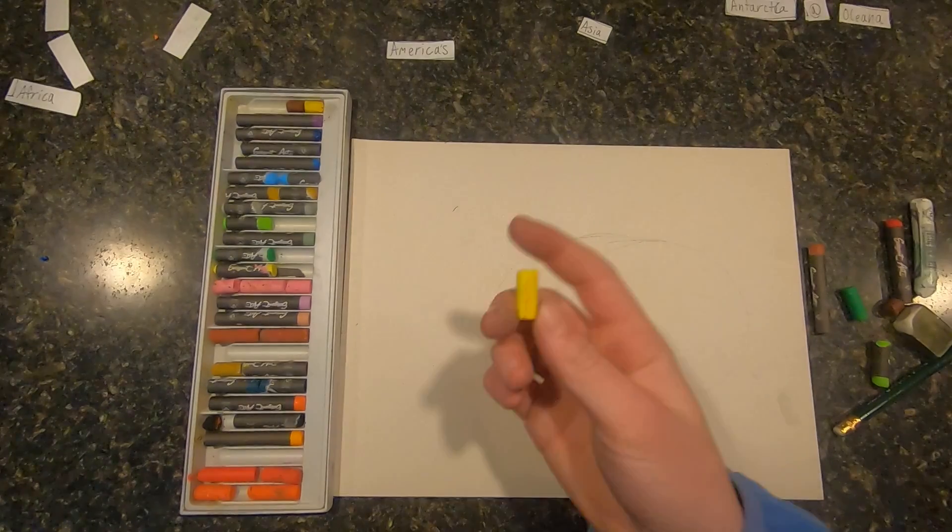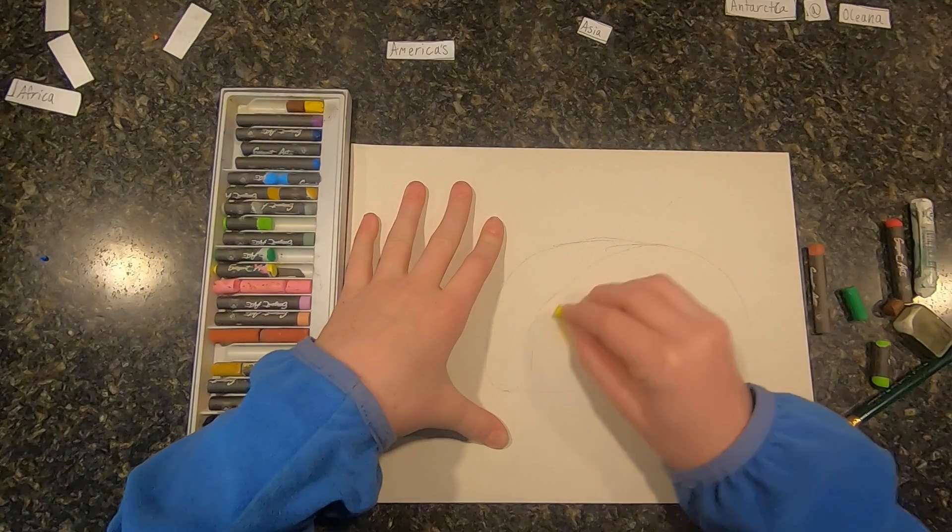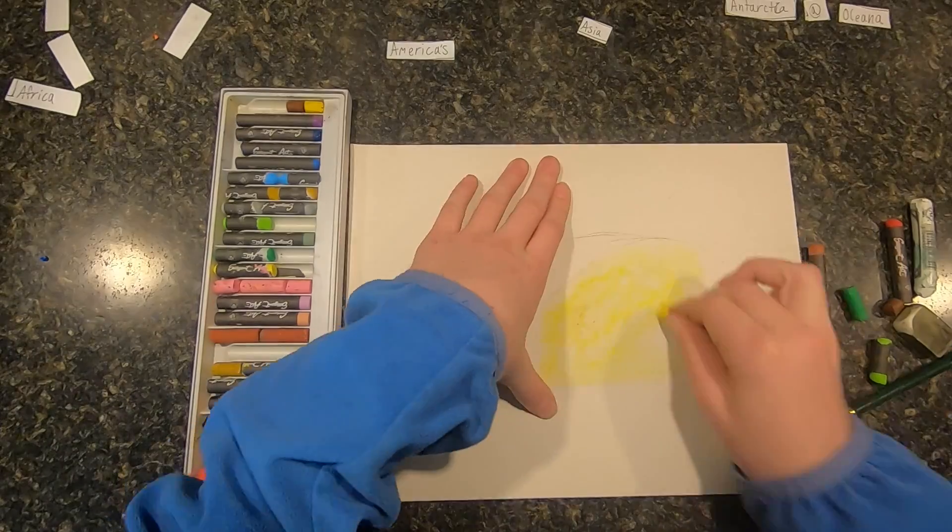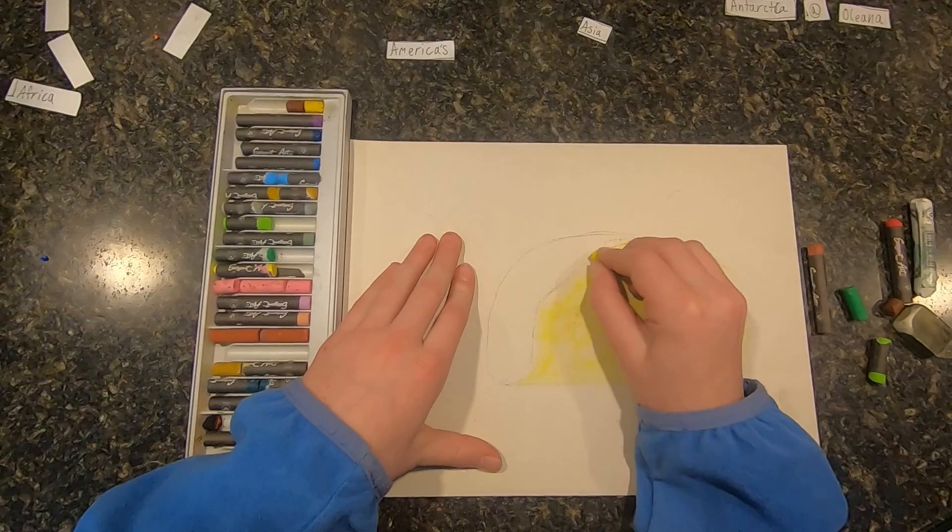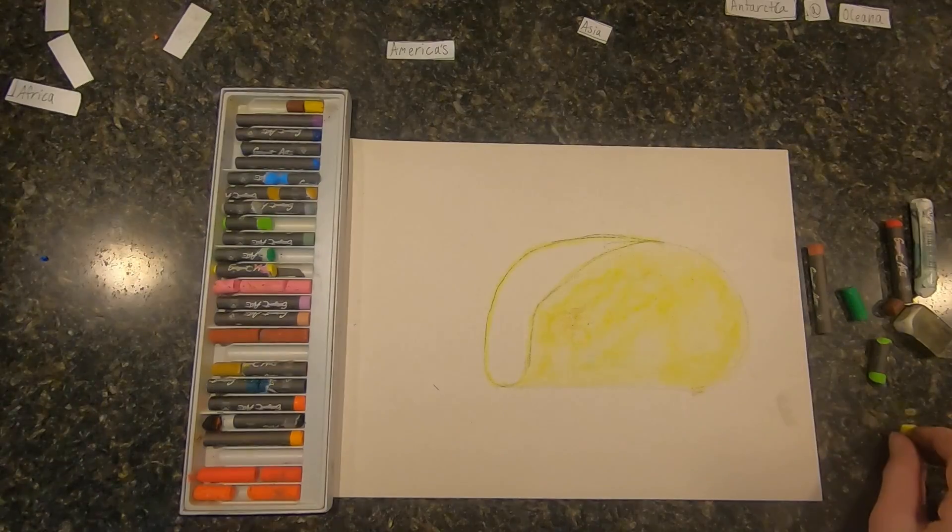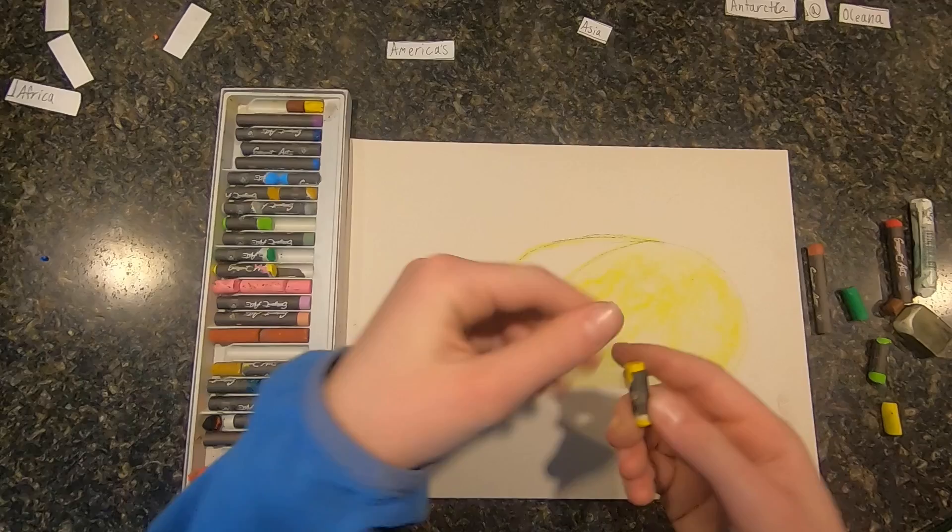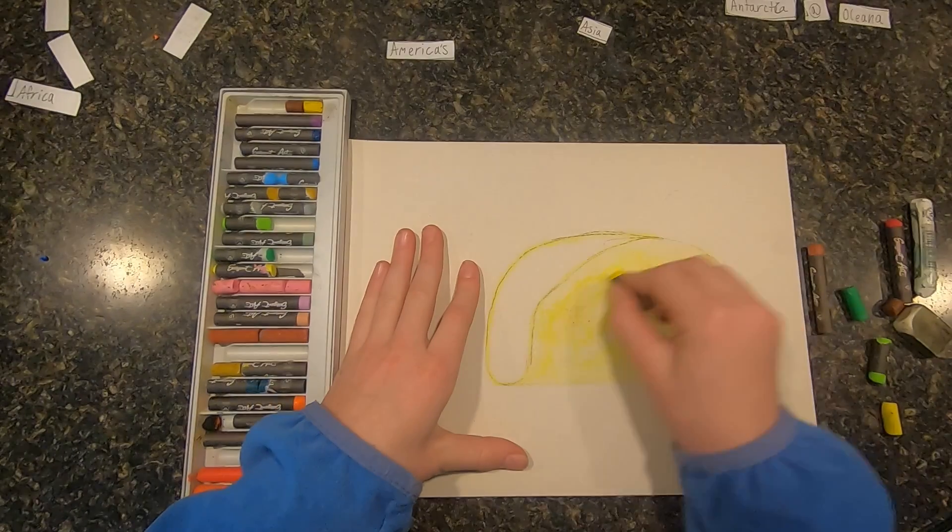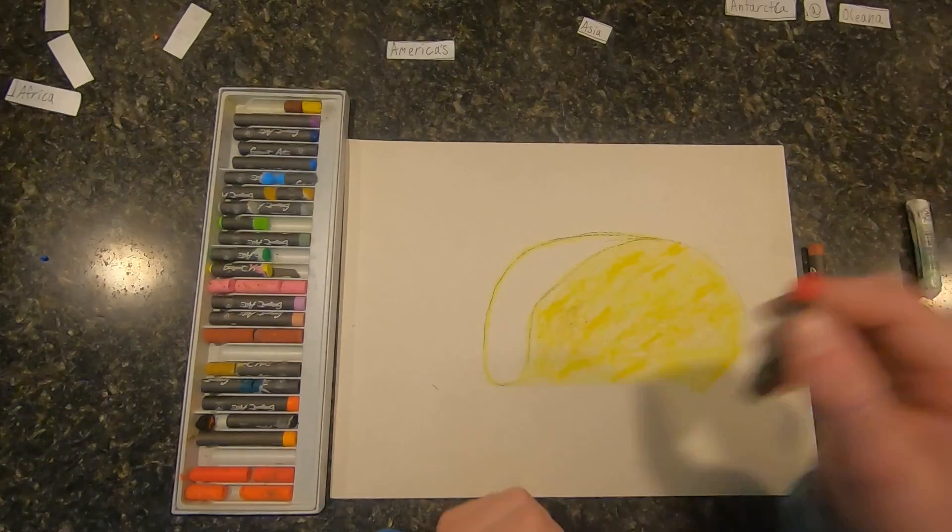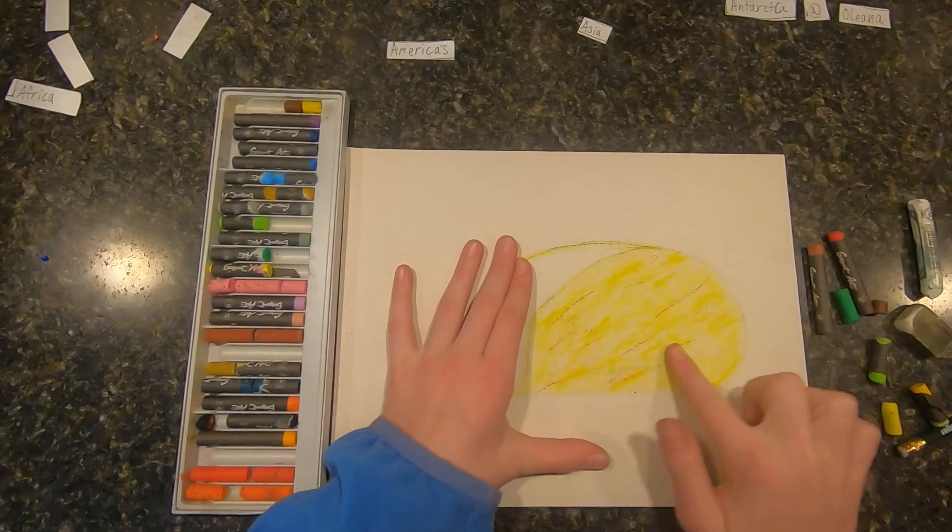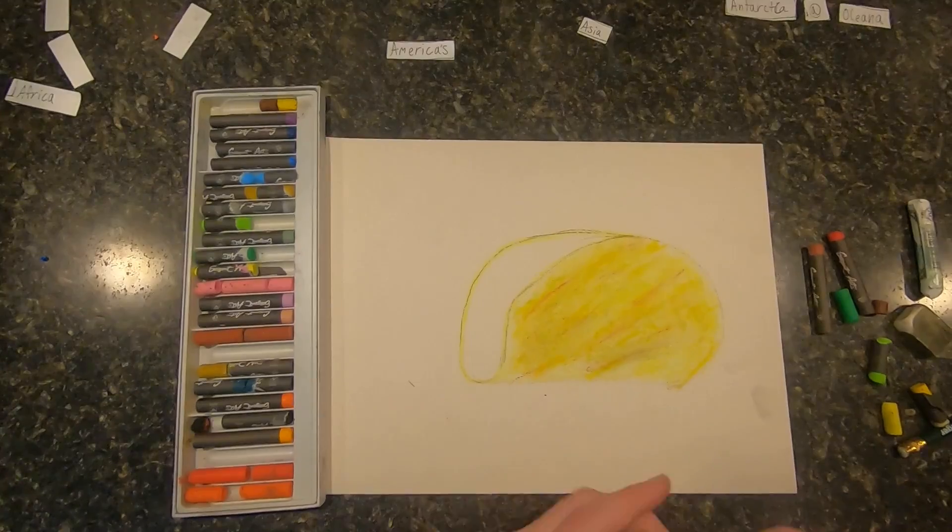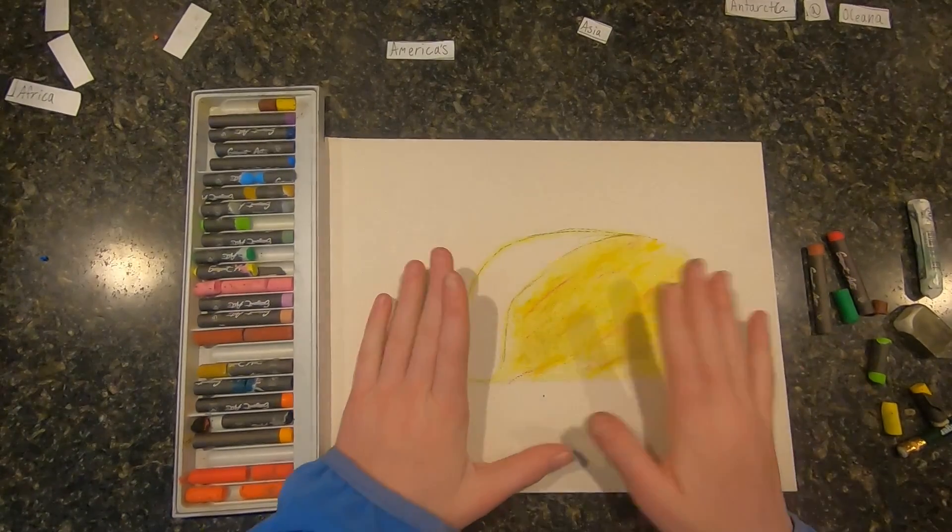So I'm going to use my lighter one and go around. Okay, then I'm also going to do the outside. Just follow along. Now I'm going to go to my darker yellow and kind of go through a little with this. And then I'm going to take my red and go through here a little bit too. And then I'm going to try to rub it in a little with my finger. Like that. So that's my taco shell for now.